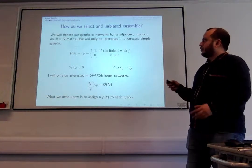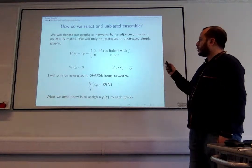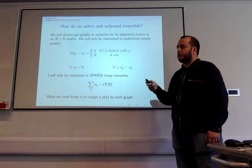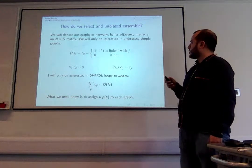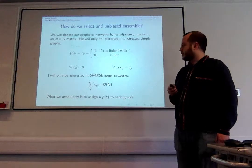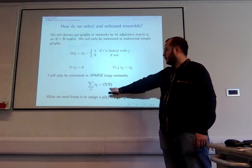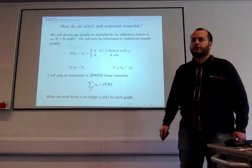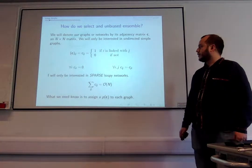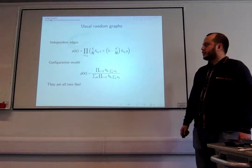When I say networks, I'll be talking only about simple non-directed networks, represented by their adjacency matrix — a big matrix of ones and zeros, symmetric and sparse, meaning the number of non-zero entries is proportional to system size.